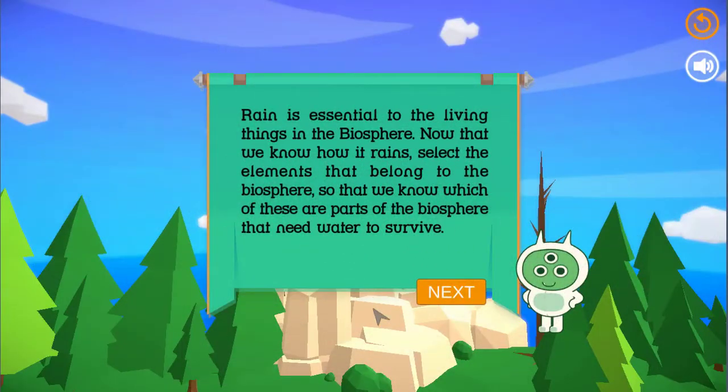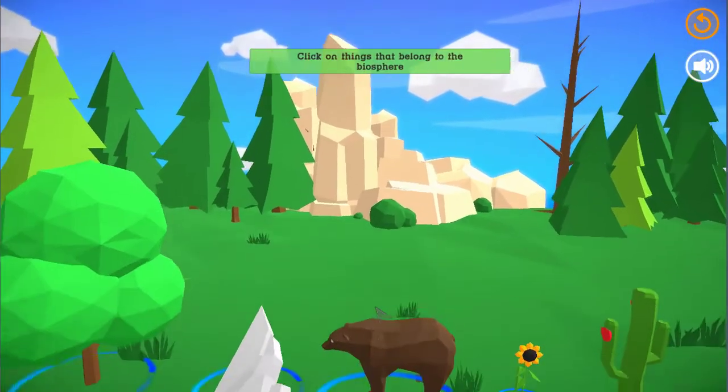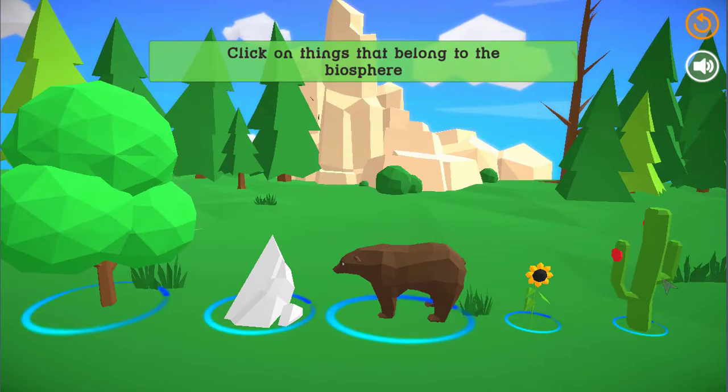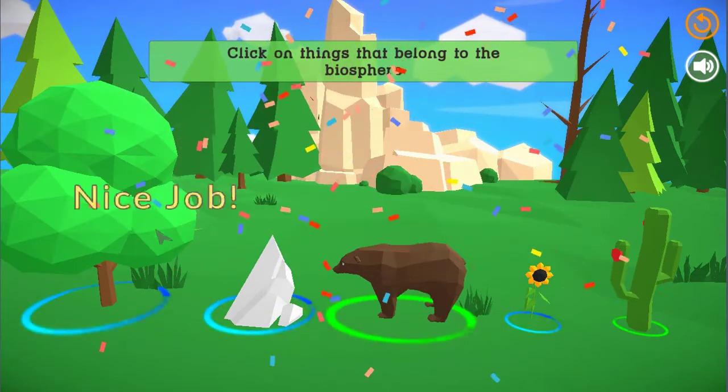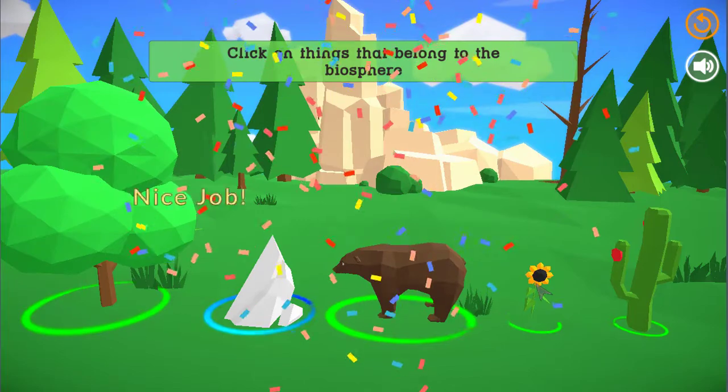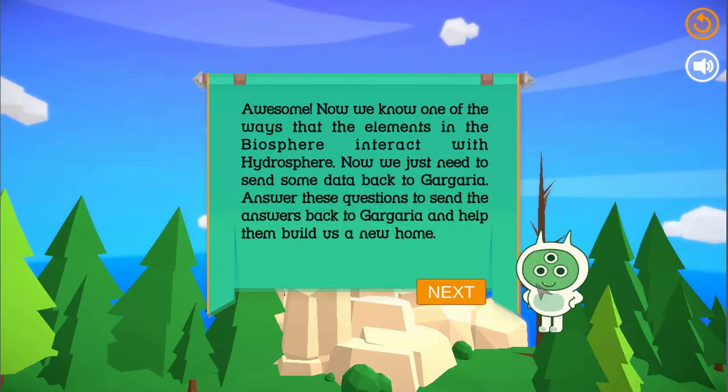Rain is essential to the living things in the biosphere. Now that we know how it rains, select the elements that belong to the biosphere, so that we know which of these are parts of the biosphere that need water to survive. Awesome! Now we know one of the ways that the elements in the biosphere interact with hydrosphere.